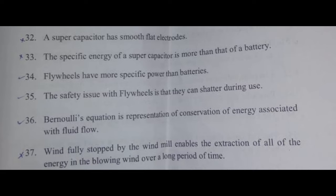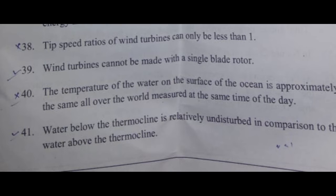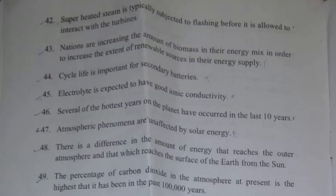Wind being fully stopped by a windmill enables the extraction of all of the energy in the wind over a long period of time. The tip speed ratio of wind turbines can only be less than one. Wind turbines cannot be made with a single blade rotor. The temperature of water on the surface of the ocean is approximately the same all over the world measured at the same time of day. Water below the thermocline is relatively undisturbed compared to water above the thermocline. Superheated steam is typically subjected to flashing before it interacts with turbines. Nations are increasing the amount of biomass in their energy mix to increase the extent of renewable energy sources.